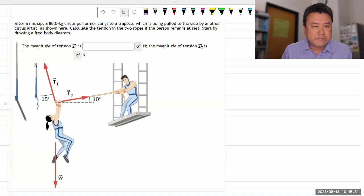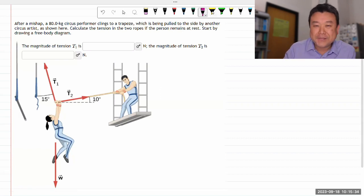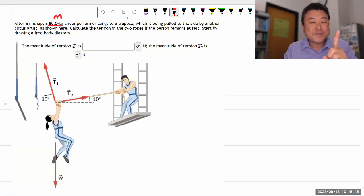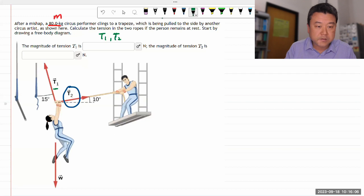This question says, after a mishap, all this background stuff doesn't matter. What does matter is that we are given the mass of the circus performer, which is being pulled to the side. Our attention is being pulled towards this tension by another circus artist as shown here below. Calculate the tension in the ropes, T1 and T2 as labeled, if the person remains at rest. That's important information, and when they say remains at rest, the important part is the acceleration is zero. That should give you some expectation that the net force will be zero.